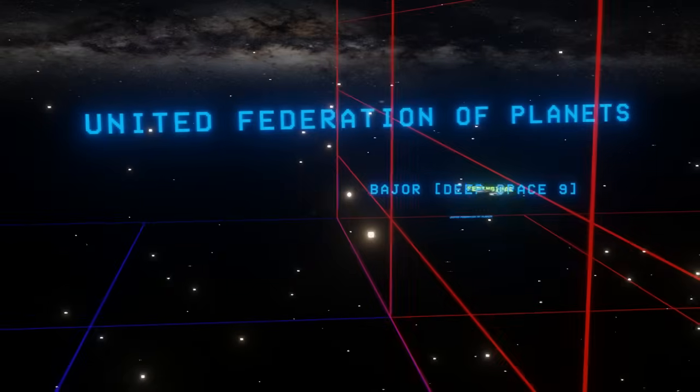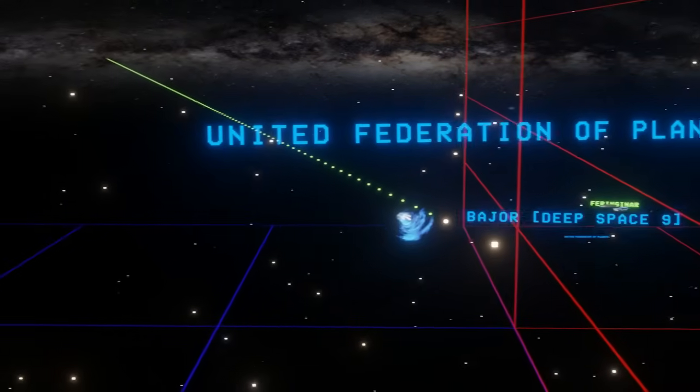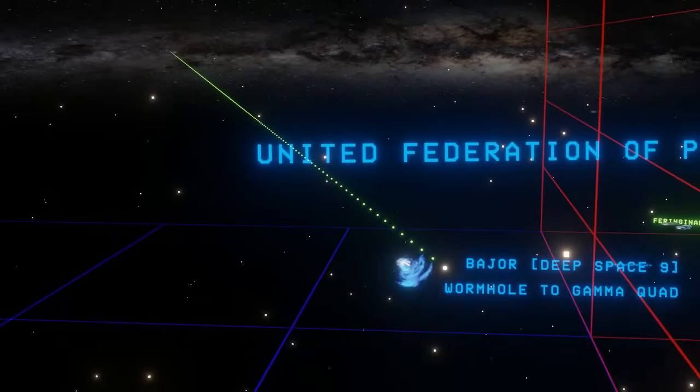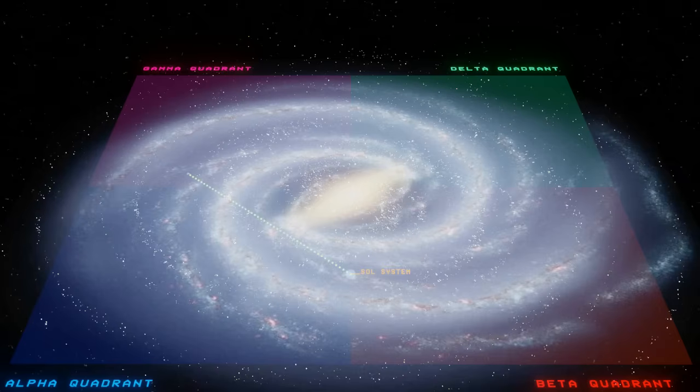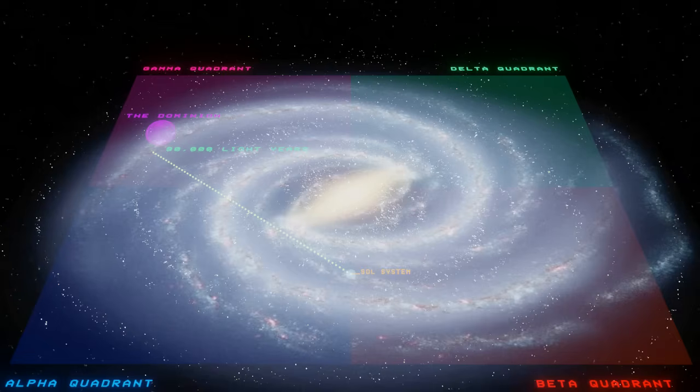So back to the Bajoran wormhole. This of course leads to the Gamma Quadrant. The Terminus is about 90,000 light-years distance from Bajor. Let's increase the cruising speed of a ship to warp 8, which is now 1,024 times the speed of light, and it would take about 87 years to travel that distance.